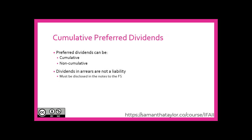That brings us to cumulative preferred dividends. Preferred shares may have features that are either cumulative or non-cumulative. Cumulative means that any preferred dividends not paid in prior years must be paid first in the current year — those unpaid dividends from prior years are referred to as dividends in arrears. Non-cumulative means any unpaid preferred dividends from prior years do not need to be paid in the current year. As a reminder, dividends in arrears are not a liability, as there is never a guarantee the company will declare and pay them — they fail the criterion of representing a present obligation the company cannot avoid, so they do not meet the definition of a liability. However, any dividends in arrears must be disclosed in the financial statements.